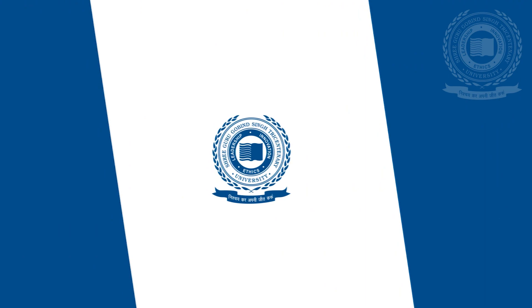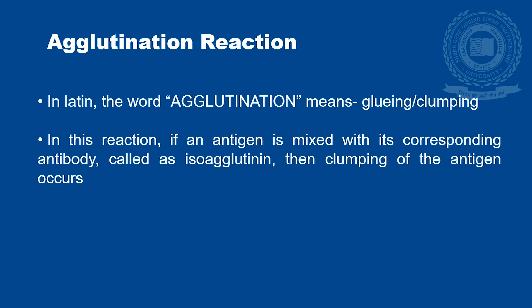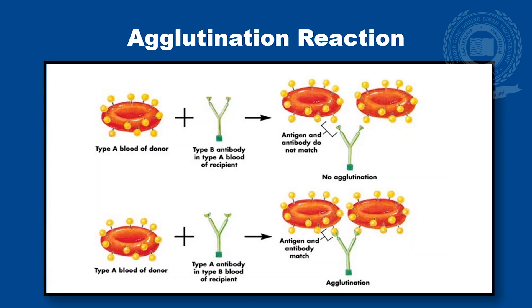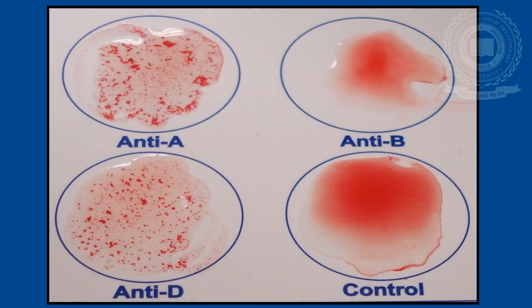Now let us know about agglutination reactions. In Latin, the word agglutination means gluing or clumping. In this reaction, if an antigen is mixed with its corresponding antibody called as isoagglutinin, then clumping of the antigen occurs. For example, if antigen A is mixed with anti-B antibody, then RBCs do not agglutinate. But if the same antigen is made to react with anti-A antibody, then RBCs agglutinate, leading to hemolysis. Agglutination appears as flakes — like here, where we can judge the blood group as A Rh positive.